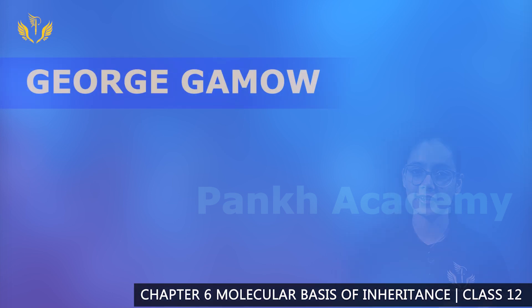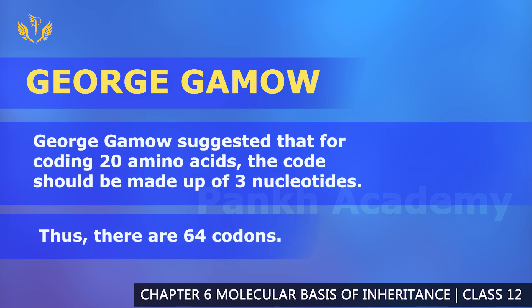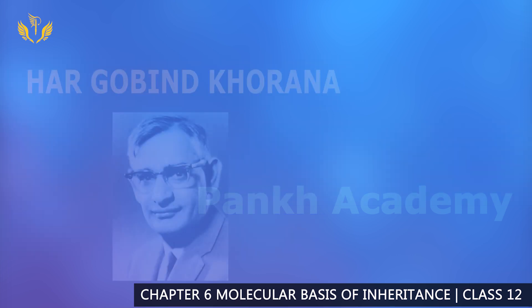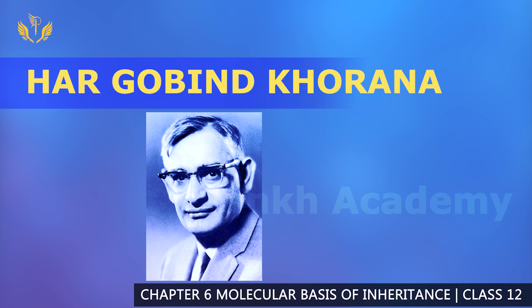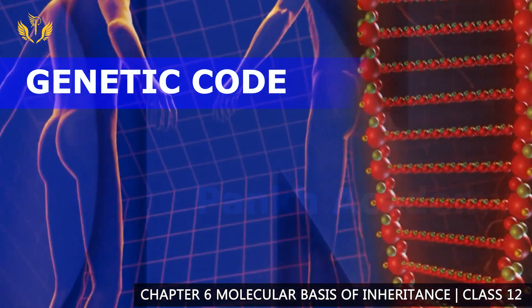Genetic code: first, a scientist named George Gamow suggested that the code should be made of three nucleotides. With that, they said that 4 to the power 3 gives you 64 codons. Then another scientist developed a chemical method for synthesizing RNA molecules with a defined combination of bases.